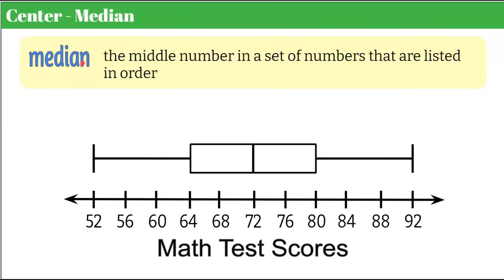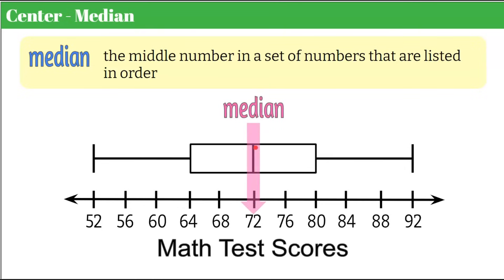Let's find the median. We know it's the middle number in a set of numbers listed in order. Here we don't have a data set, but we have a box plot, and we've learned that our median is the line inside the box. We can see that the median in this data set, graphed as a box plot, is 72. That means when all the test scores were listed in order, the middle score was 72 — there were as many scores below 72 as above it.